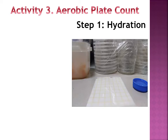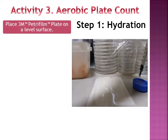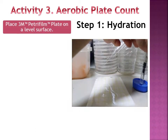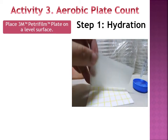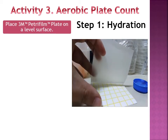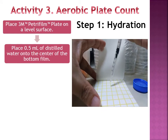You may wipe this area with alcohol. The first step is the hydration of petrifilm. Place the 3M Petrifilm plate on a level surface. Place 0.5 ml of distilled water onto the center of the bottom film.